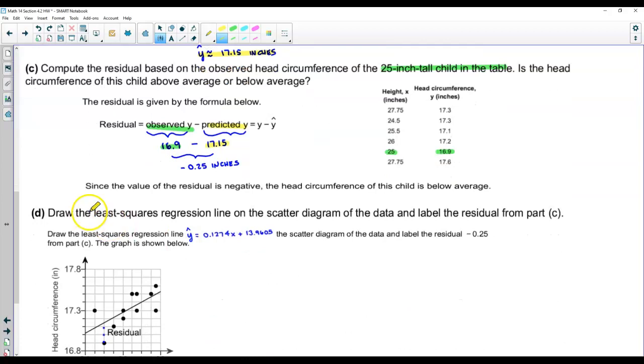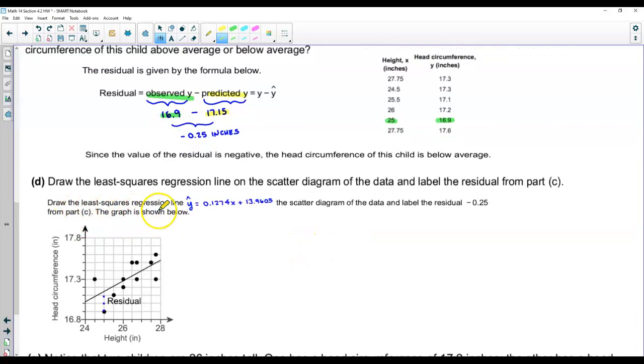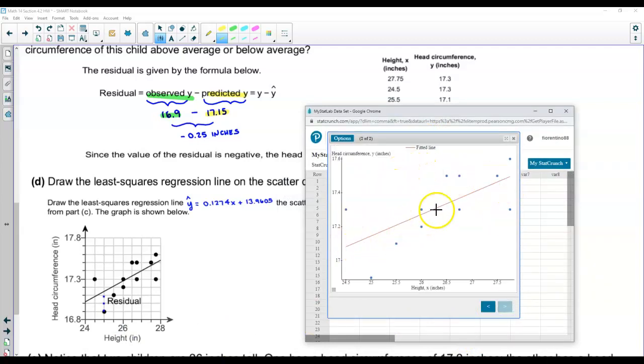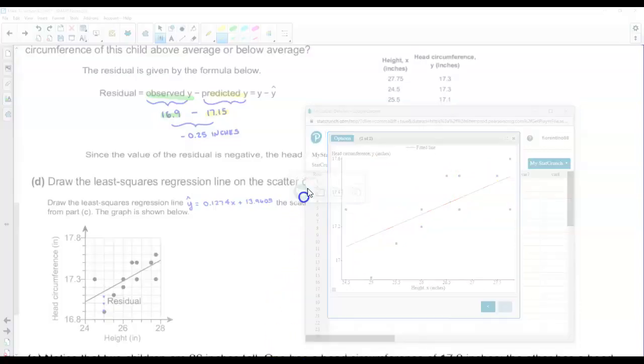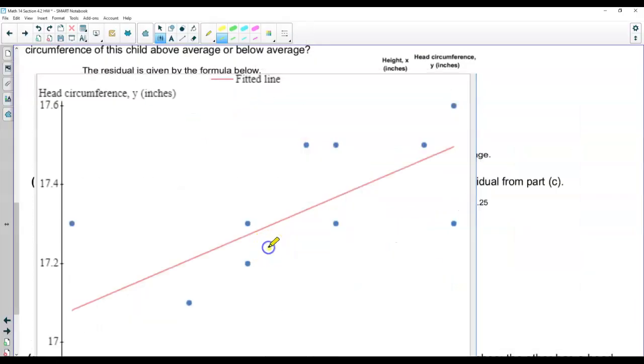Part D, it says draw the least squares regression line on the scatter diagram of the data and label the residual from part C. So what we're going to do is draw the least squares regression line, Y equals 0.1274X plus 13.9605, on the scatter diagram of the data, and then label the residual negative 0.25 from part C. So we've already done this on StatCrunch. So let's go ahead and open up StatCrunch, and if you go over here and then select to the right, you're going to see the actual line, which is the regression line, that's been graphed here. So I'm going to go ahead and copy and paste that into our page here.